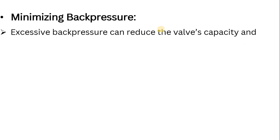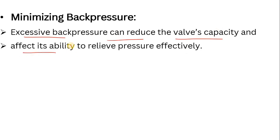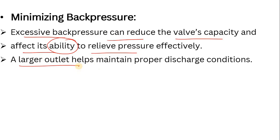The third reason is minimizing back pressure. If excessive back pressure builds up at the outlet of the PSV, it can reduce the valve's capacity to operate. If the PSV is sized improperly, excessive back pressure can significantly affect its opening, and if the system is over-pressurized, the PSV will not pop up. That's why a larger outlet helps maintain proper discharge conditions. In upcoming videos, I will show how back pressure affects the calculation.